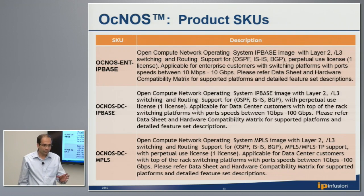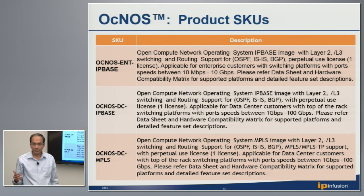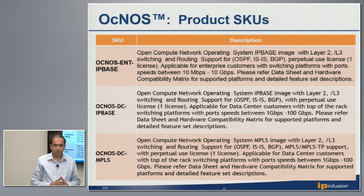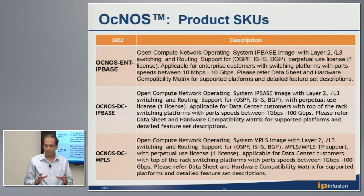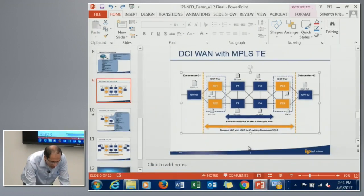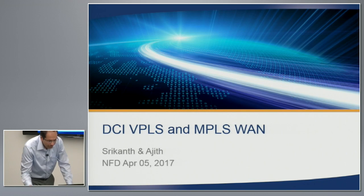The enterprise SKU is geared towards the 1G platforms. The DC IP base essentially covers basic Layer 2 to Layer 3 functionality geared towards data center applications — this can handle all the basic DC applications. We also have the DC MPLS SKU which covers all the MPLS features the platforms can support. I just wanted to mention that before we move on to the demo.